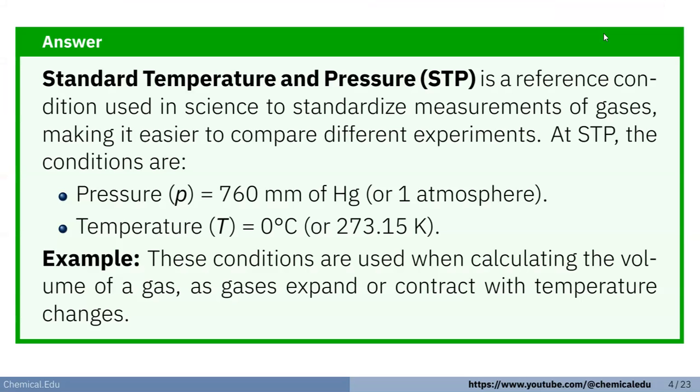Here is the answer. Standard temperature and pressure, STP is a reference condition used in science to standardize measurement of gases, making it easier to compare different experiment. At STP, the condition are pressure is 760 mmHg or 1 atmosphere, and temperature T is 0 degree centigrade or 273.15 Kelvin. Here is the example of STP.